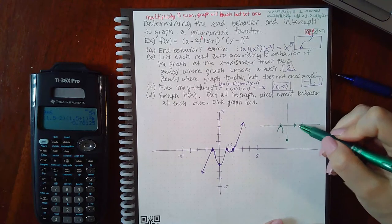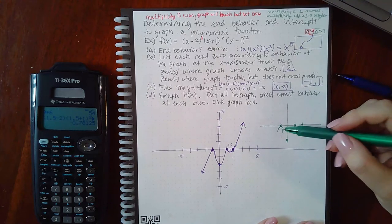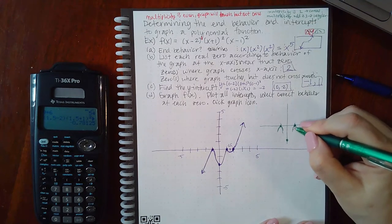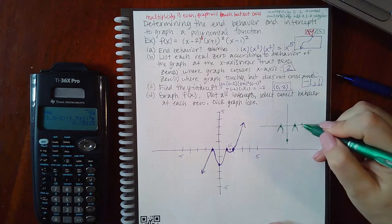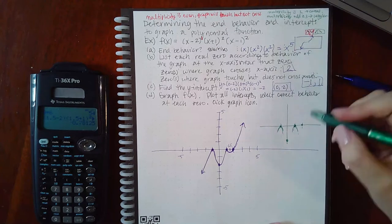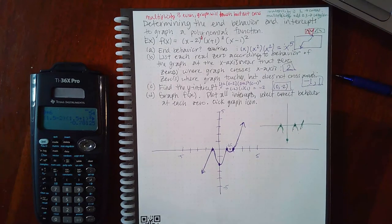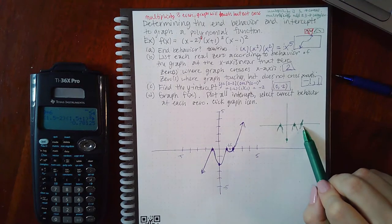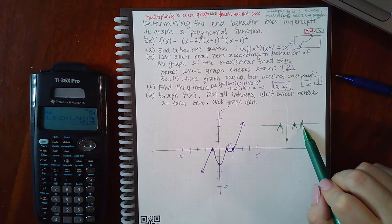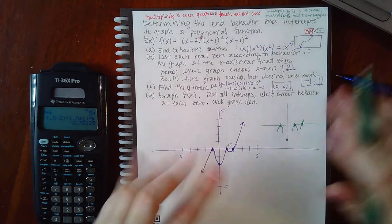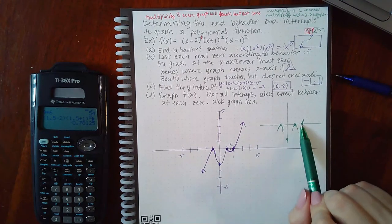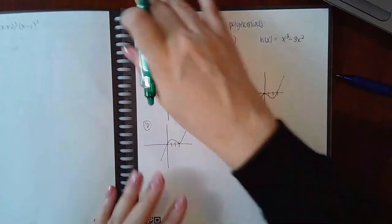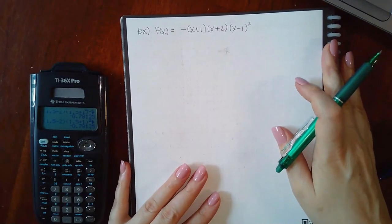For x = 1, since the graph is coming from below it touches from below — that button shows it coming up and touching without crossing. For x = 2, the graph is in the lower region and must eventually go upward, so it crosses going upward. Once you plot all x-intercepts and click the correct behavior icons at each one, you click the graph icon — the big wave — and ALEX plots the curve for you.